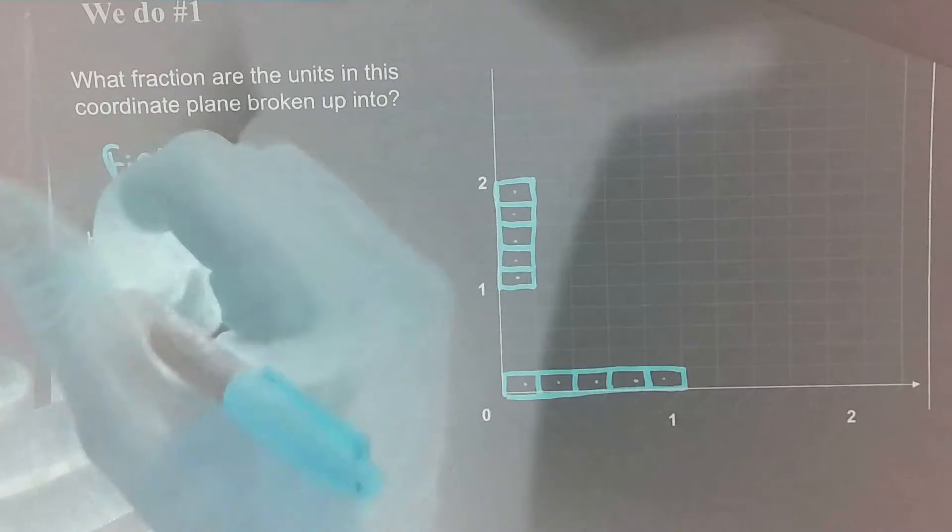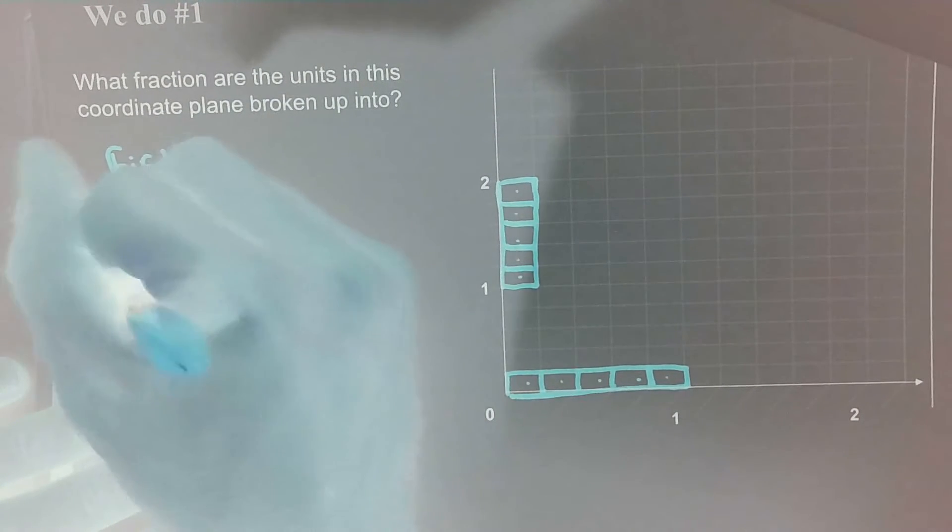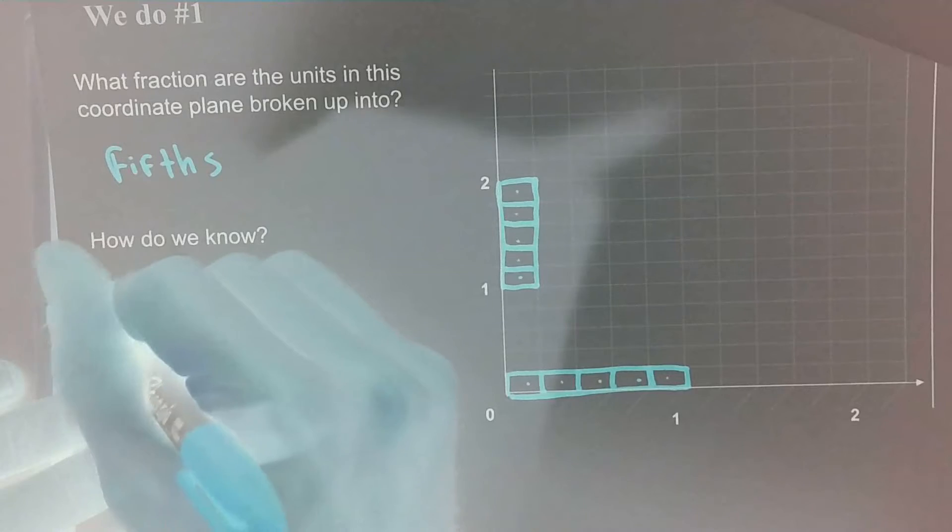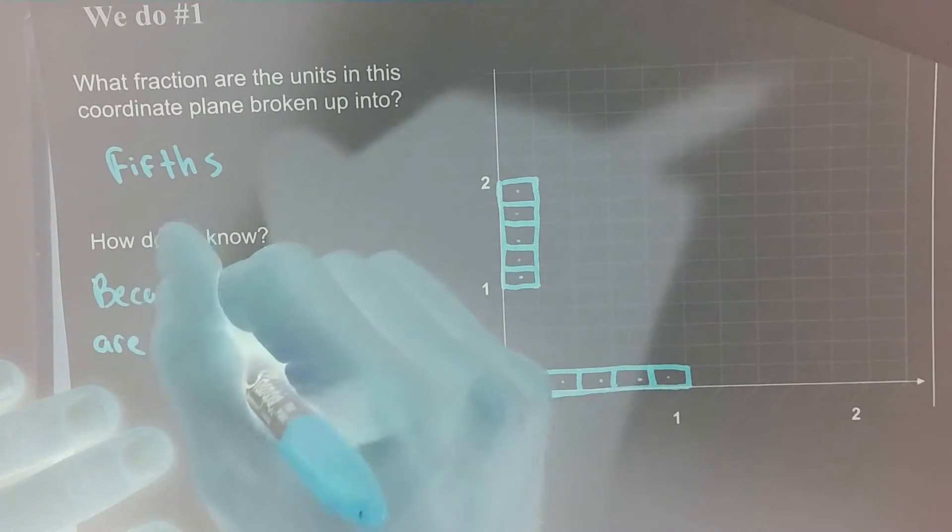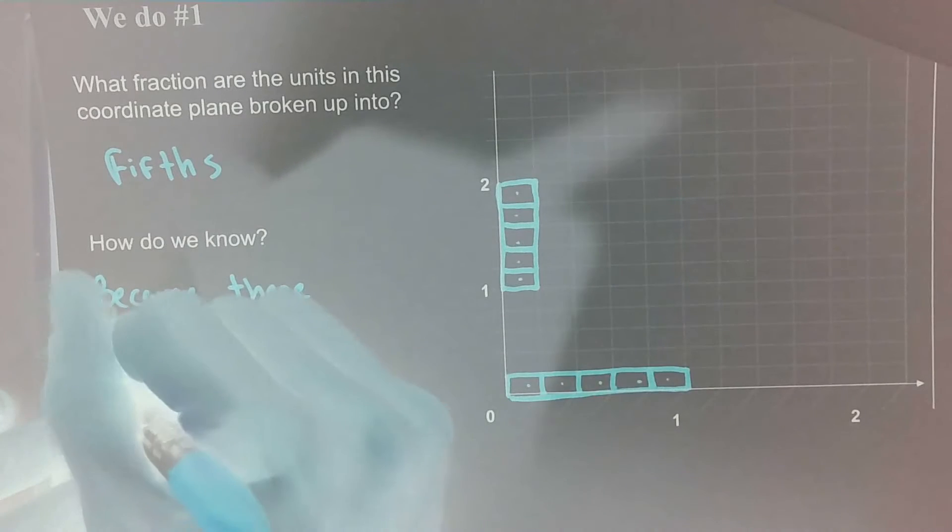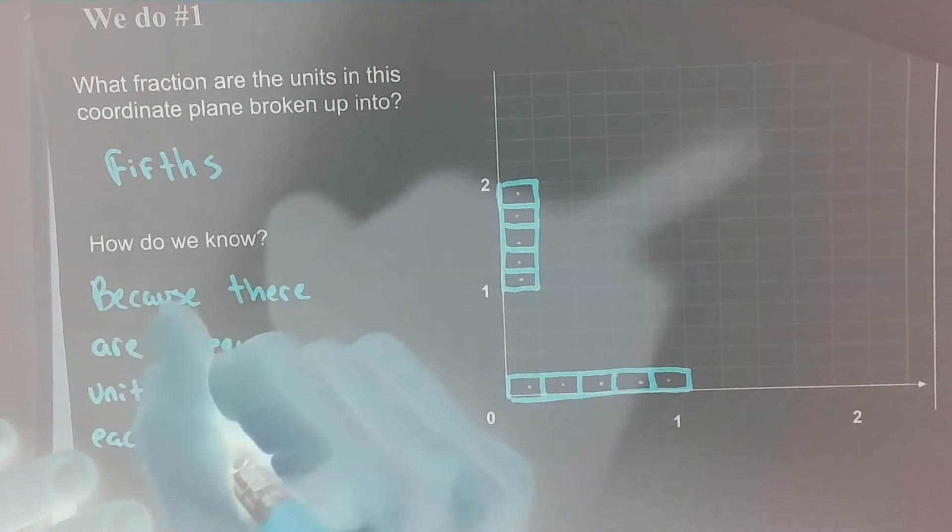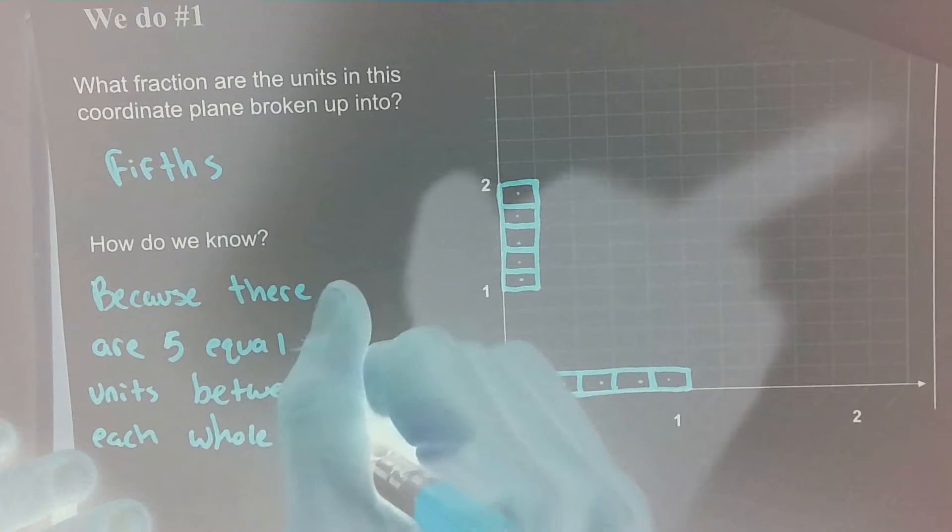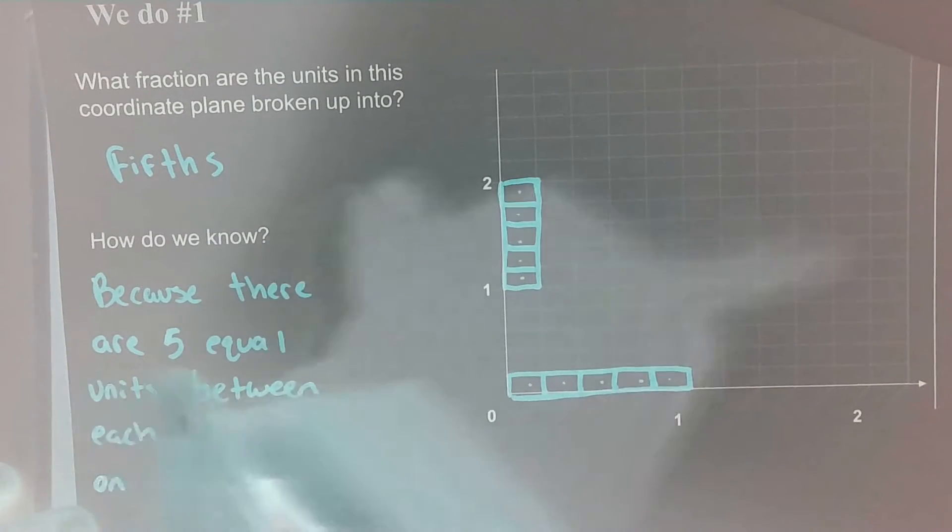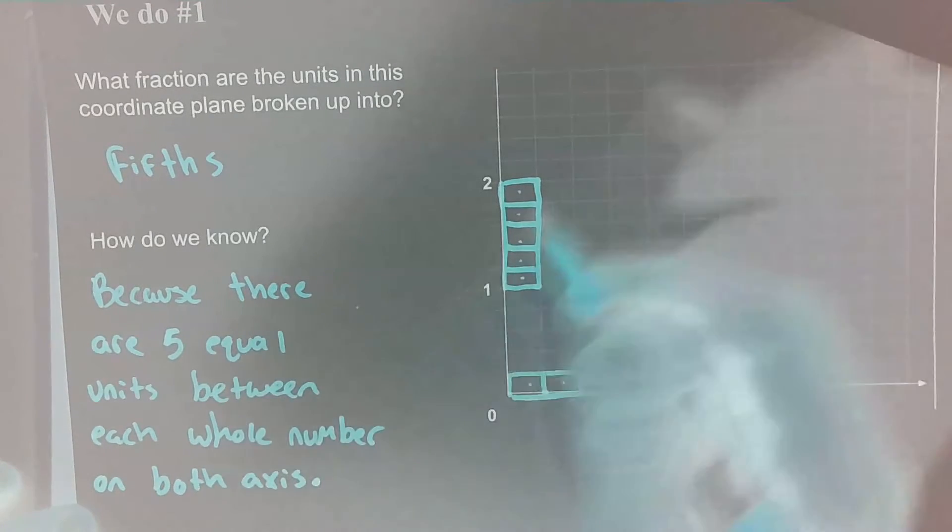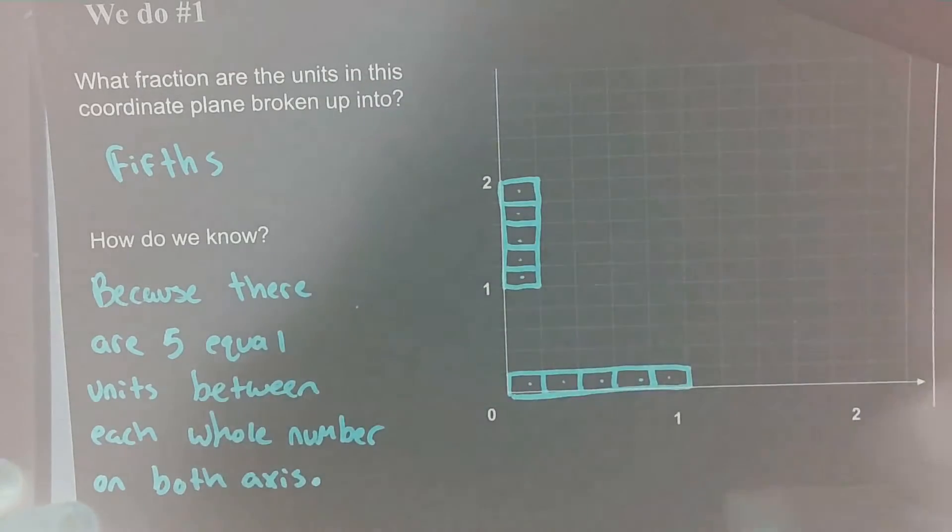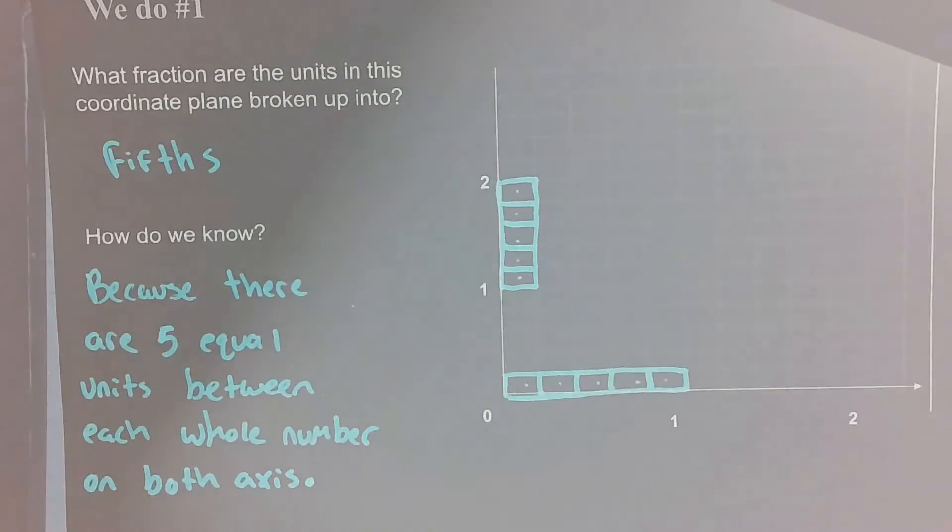And we know this because there are five equal units between each whole number on both axes, right? There was five equal units between one and two on the y-axis, five equal units between zero and one on the x-axis. And that's how we know it's broken up into fifths.